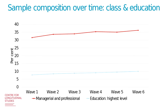Here you can see what happens in terms of two other variables: social class and education. The proportion of parents doing managerial and professional jobs has increased by about 5% over time. And the proportion of main respondents who have high levels of education has also increased. So response tends to be higher among people with managerial and professional jobs and with higher levels of education.